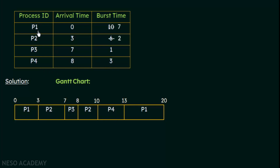Finally, P1 is the only process remaining. It gets the CPU at the 13th millisecond and executes for its remaining 7 ms, completing at the 20th millisecond. This completes the full Gantt chart for processes P1 to P4. Whenever we have this kind of problem — whether calculating average waiting time or average turnaround time — it is crucial to form the Gantt chart first, as it makes the remaining calculations straightforward.